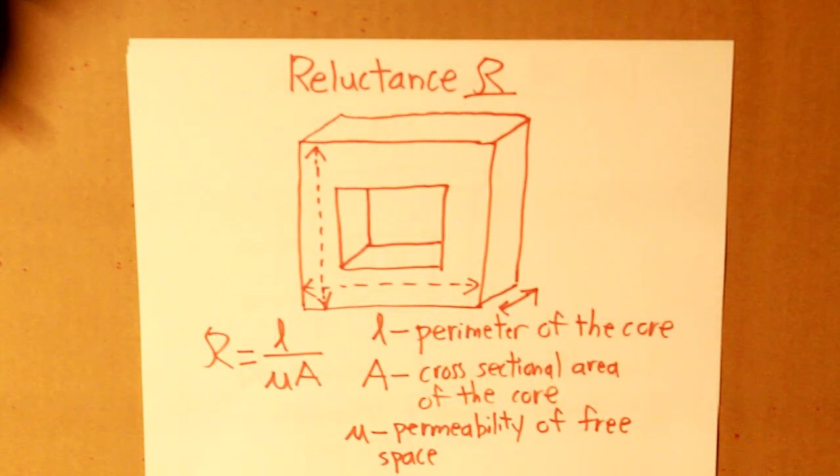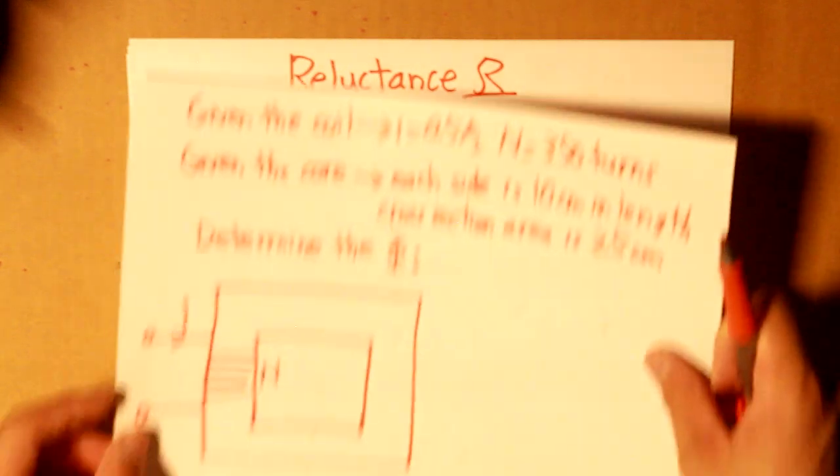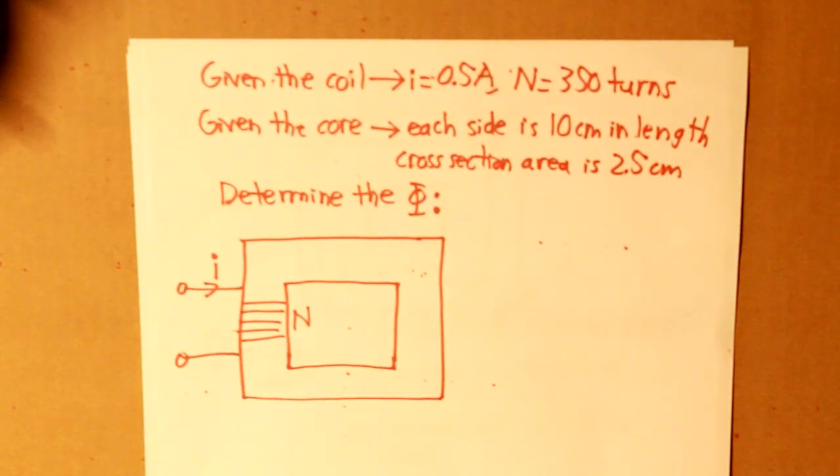Now, let's do a question, shall we? Since we've determined what our parameters, cursive R and F is. Now, we can find the flux in a magnetic circuit. So, here's the question.